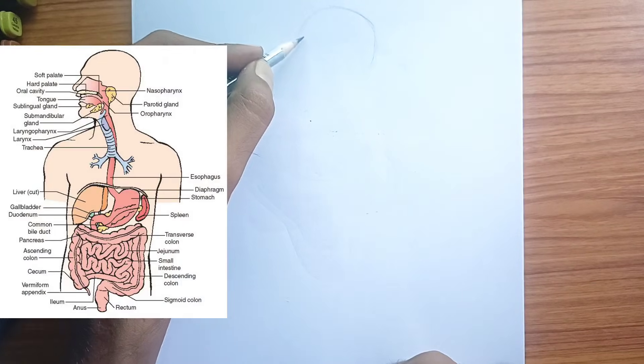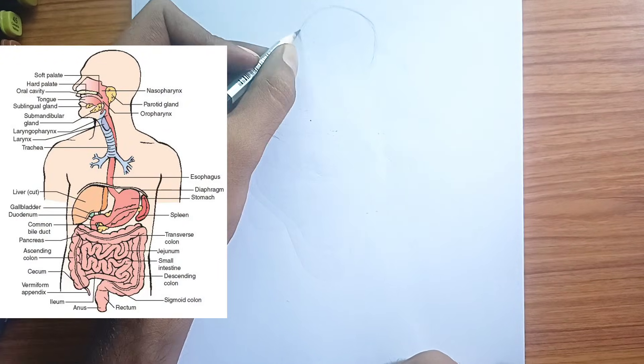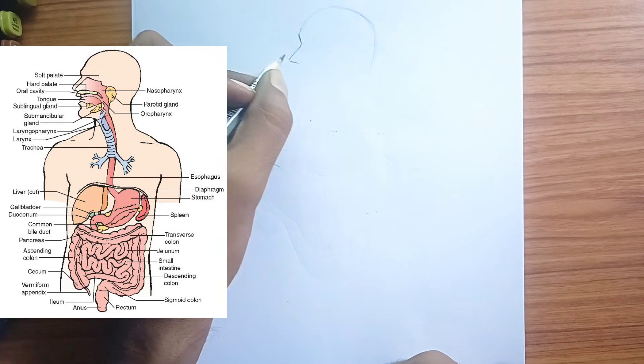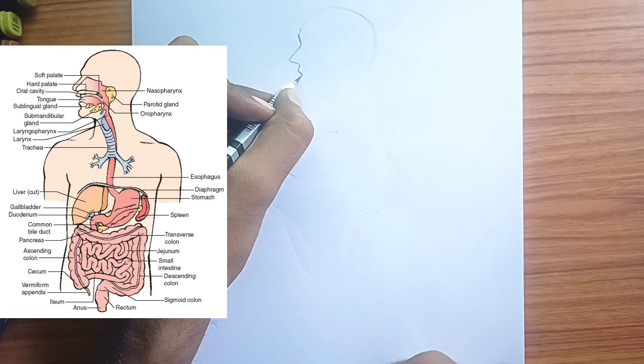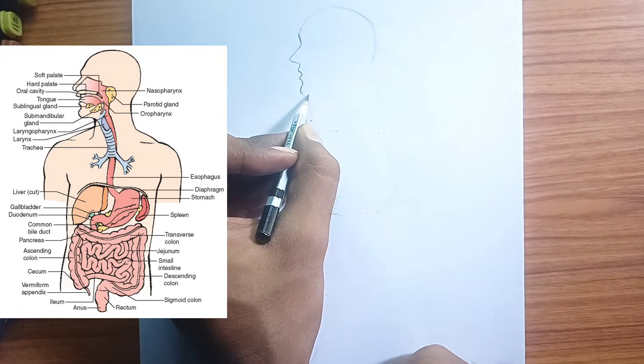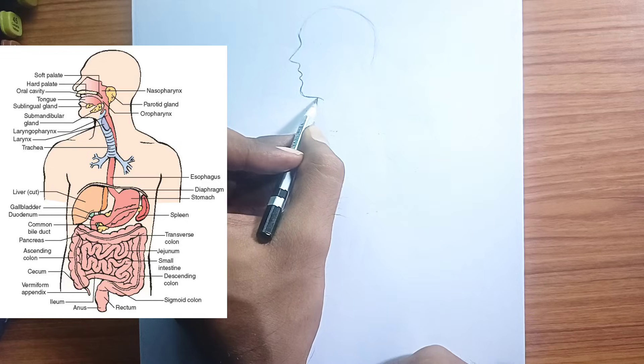The human digestive system is a complex process that breaks down food into nutrients the body can absorb for energy, growth, and repair. It's essentially a long tube, the gastrointestinal GI tract, running from the mouth to the anus, aided by accessory organs.